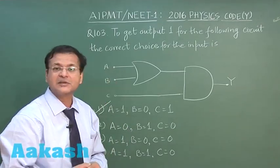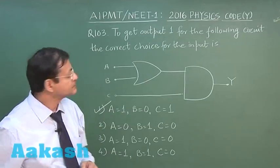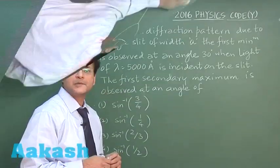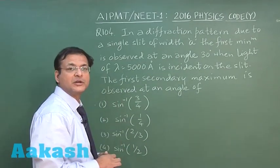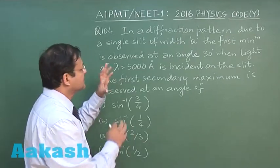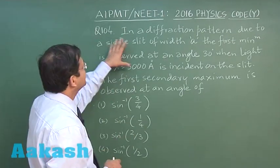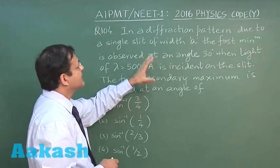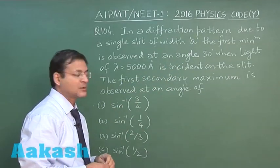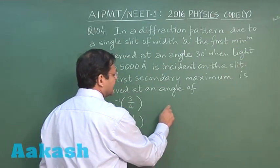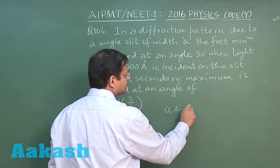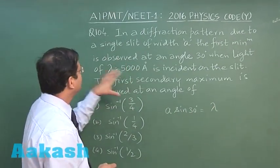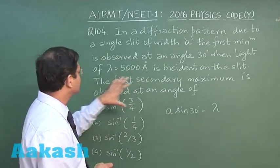Now let us switch over to next question, that is question 104. Now in this question 104, which is based on diffraction at single slit, this is again a straightforward formula based question. It says that in a diffraction pattern due to a single slit of width a, the first minimum is observed at an angle of 30 degree. So you see what is the expression you will be writing, a sin 30 degree is equal to lambda, this is for first minimum. Value of lambda has been given 5000 angstrom is incident on the slit.